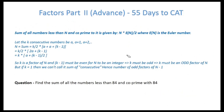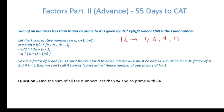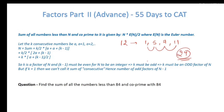Sum of all numbers less than n and co-prime to it. Let's take 12. The numbers co-prime with 12 are 1, 5, 7, and 11 — so 4 numbers. Their sum is 1 + 5 + 7 + 11 = 24. For 6, the co-primes are 1 and 5, giving a sum of 6.